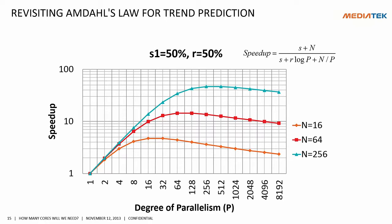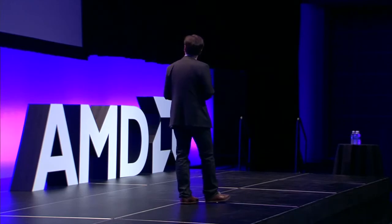I'd like to go back and revisit Amdahl's law to see how we can use it for trend prediction. Here I try to formulate Amdahl's law quite differently from what you see in your textbook. I draw different curves for different problem sizes — I think it's good for data parallel workload because problem size scales very easily. There are three curves for problem sizes 16, 64, and 256. I also account for communication overhead proportional to the logarithm of the number of cores. As you can see, when the number of cores exceeds some threshold, performance doesn't just plateau — it starts to drop.